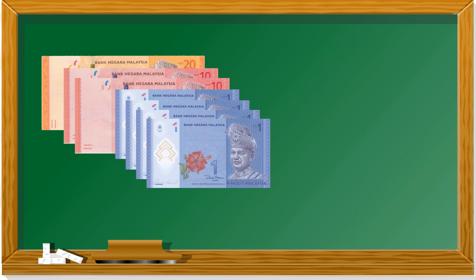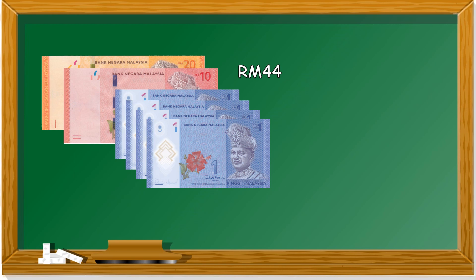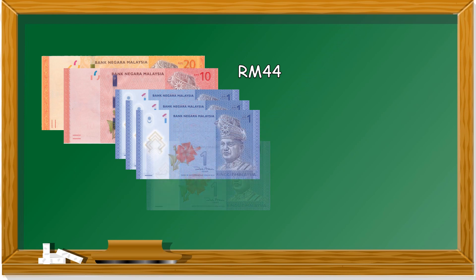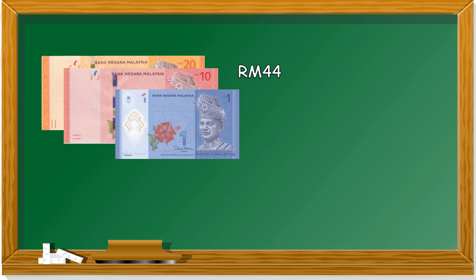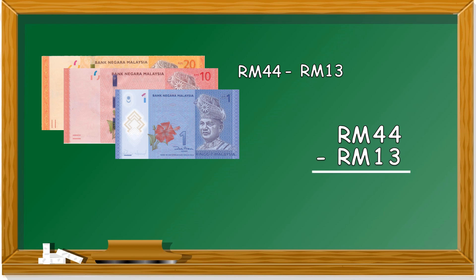Now we have one 20 ringgit note, two 10 ringgit notes, and four one ringgit notes. How much money is there in total? 44 ringgit. If we get 44 ringgit and minus off 13 ringgit — 11, 12, 13 — so 44 minus 13: four minus three is one, four minus one is three, so we have 31 ringgit left. There is one 20 ringgit note, one 10 ringgit note, and one one ringgit note — the total is 31 ringgit.